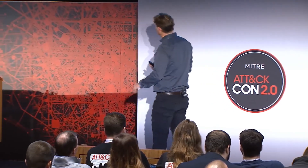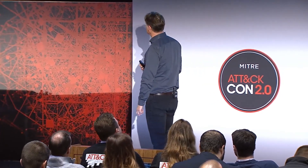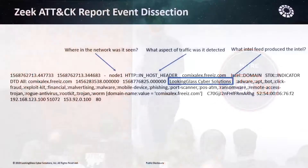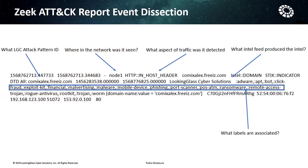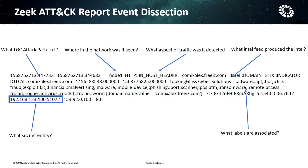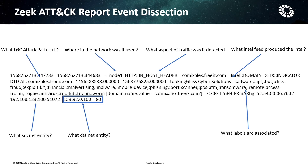I just want to give you a basic example of a simple attack event — I'll expand it so I can explain it. This is a typical event. It's got a lot of information here: you can see which network it was in, what aspect of traffic was detected, what Intel feed produced the definition, what labels are associated, what destination network, what attack pattern.